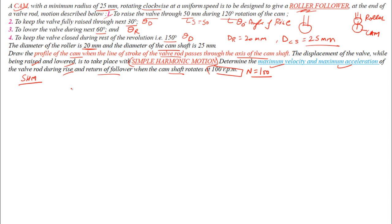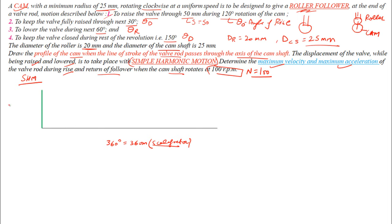First, we construct the displacement diagram. Draw a straight line of 36 cm representing 360°, so the scale is 1 cm = 10°. The follower stroke on the y-axis is 50 mm. Now divide the 360° line into: angle of ascent 120°, dwell 30°, and angle of return 60°.